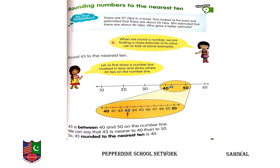Like, if we have 17, it is closer to 20. If we go toward 10, we have to move seven numbers back. But if we round off to 20, we only need to move three numbers forward. We round off to the ten that requires fewer numbers to move.